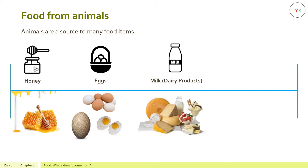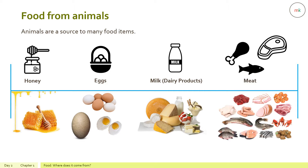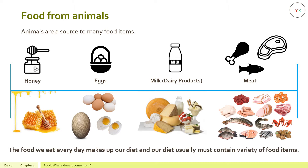We get milk from cows, goats, camels, and other animals. Milk can later be converted into cheese, butter, yogurt, cream, and buttermilk. These are called dairy products. We get meat from fish, goat, pigs, and poultry.